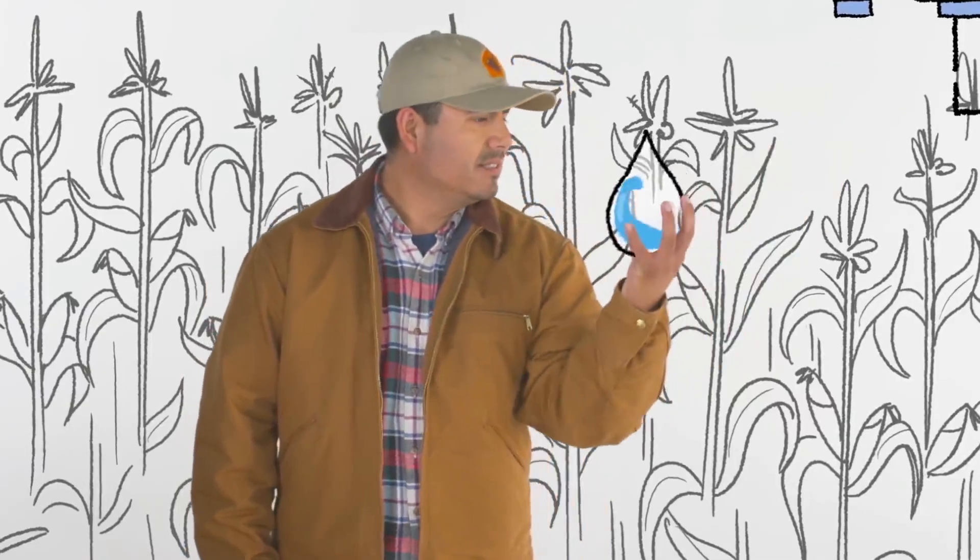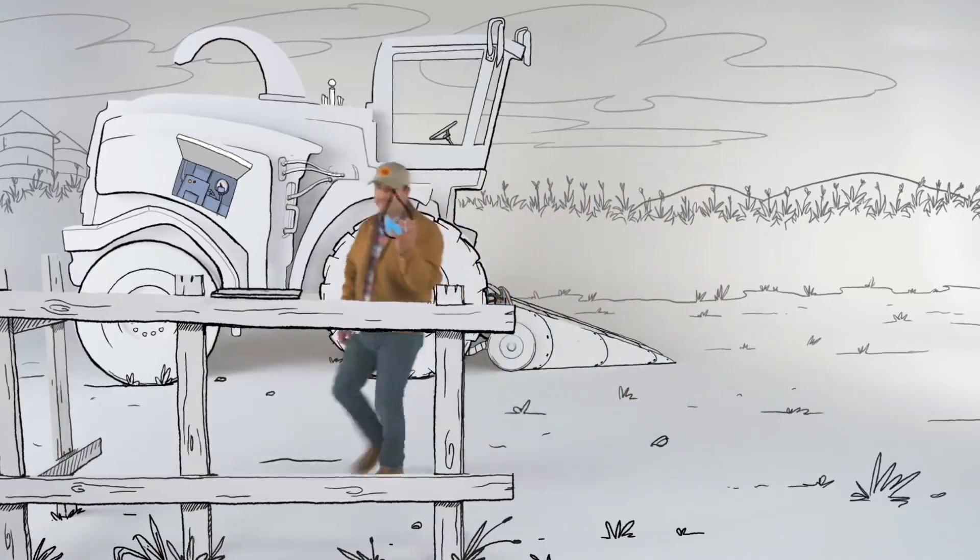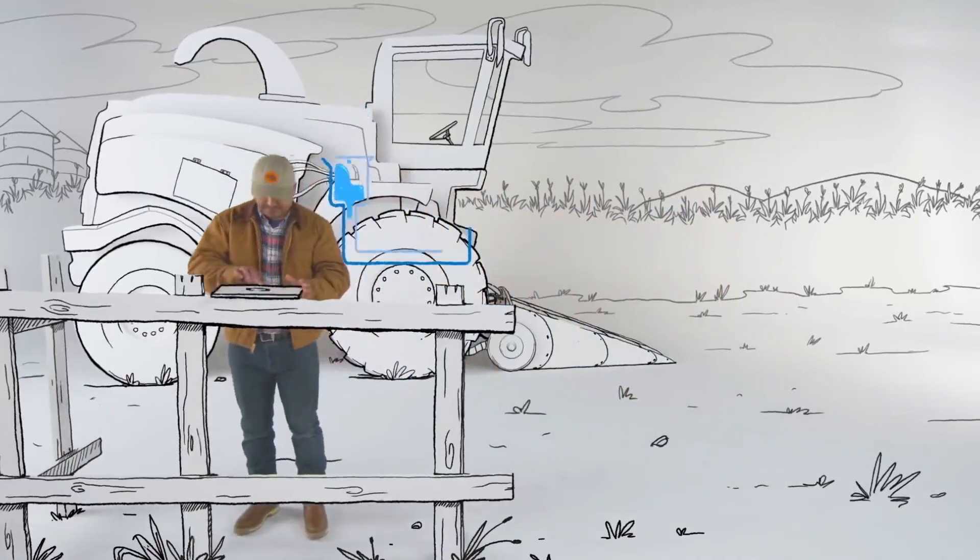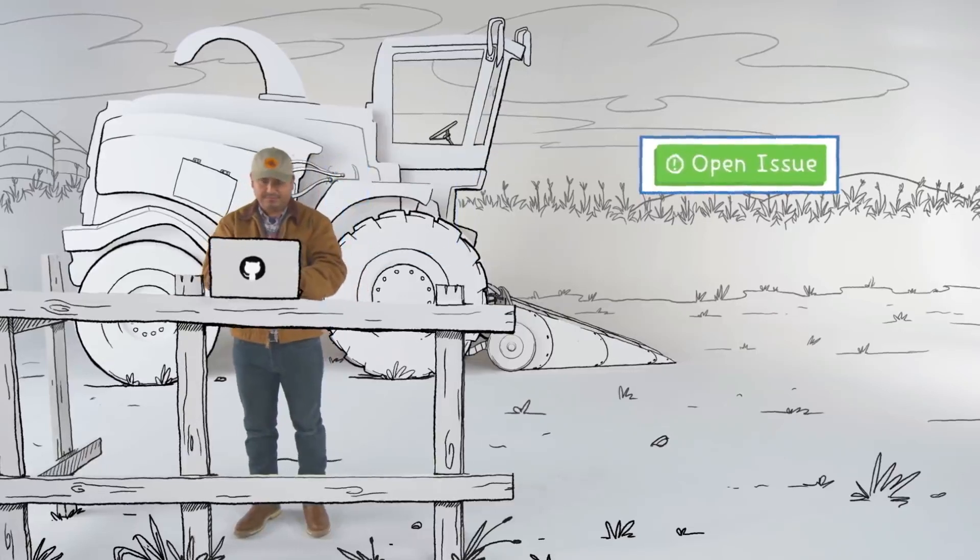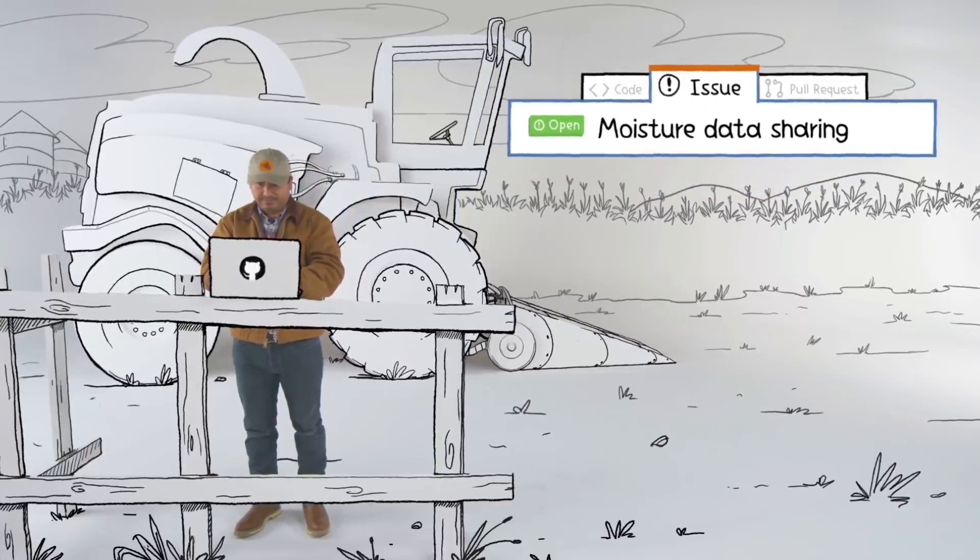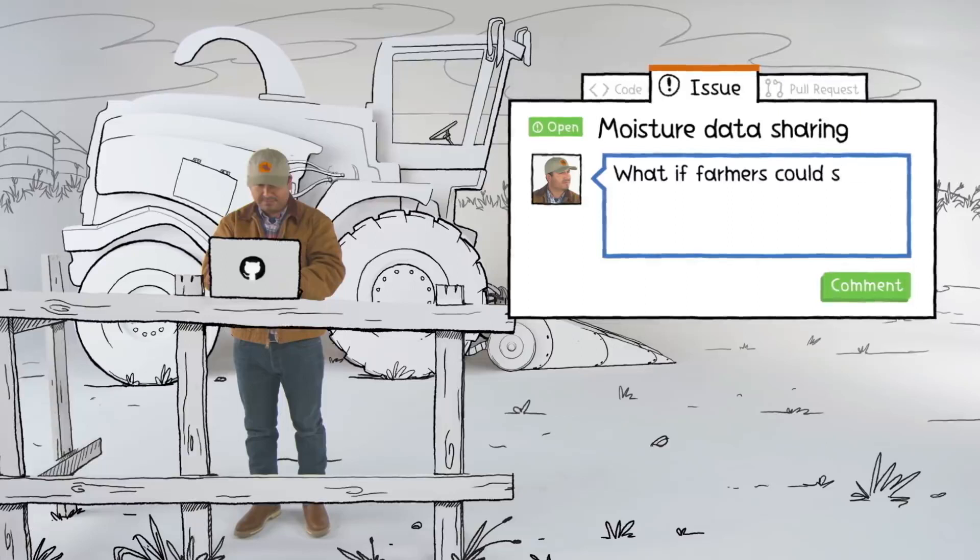Eddie has a great idea for how farmers might share their data and improve their harvests. So, Eddie opens an issue on GitHub. Issues are discussion threads where people can report bugs, request features, or even just ask questions.